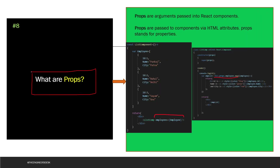The next question is: what are props? Props are an important concept for passing data from one component to another. Props are arguments passed into React components via HTML attributes, and props stands for properties. For example, if you have two components and want to pass data between them, you use props.